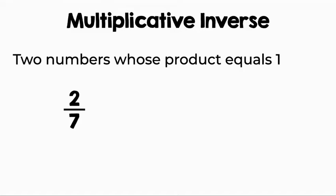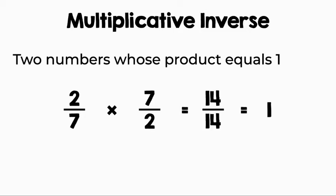Is two over seven and seven over two multiplicative inverses? Well, let's multiply straight across. Two times seven is fourteen and seven times two is fourteen. Simplified, that will equal one. So yes, two over seven and seven over two are both multiplicative inverses.